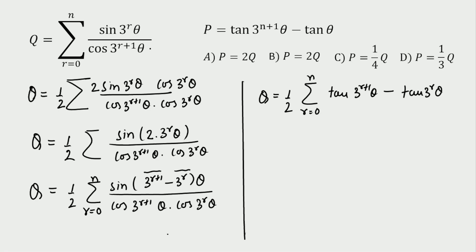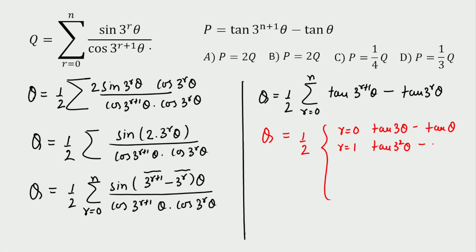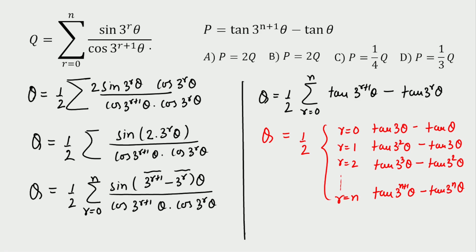With r varying from 0 to n, we get a nice telescoping series. For r=0: tan(3θ) − tan(θ). For r=1: tan(3²θ) − tan(3θ). For r=2: tan(3³θ) − tan(3²θ). And so on, up to r=n: tan(3^(n+1)·θ) − tan(3^n·θ). The intermediate terms cancel — tan(3θ) cancels, tan(3²θ) cancels, and so on — leaving only two terms.